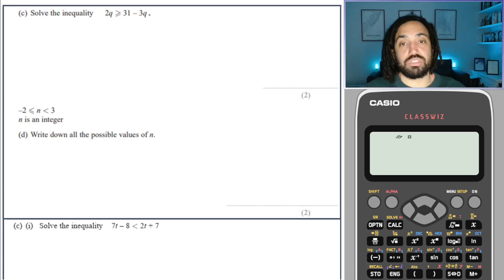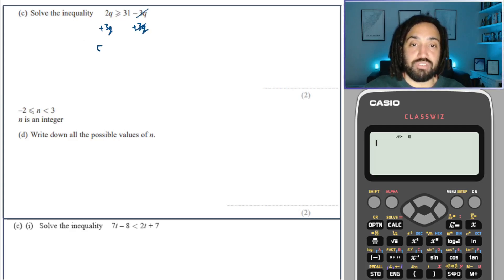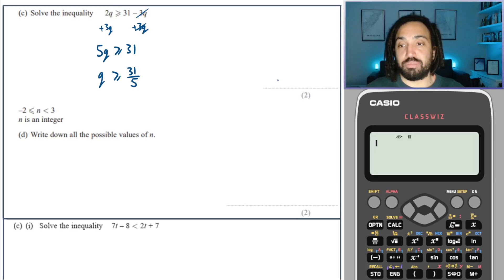This one's not as tricky actually because you could just plus the 3q over and that will give me, these will cancel and that will give me 5q on this side is greater than or equal to 31. And then just dividing through by 5 gives me 31 over 5. So that's definitely the best way to do that one.